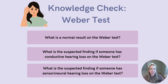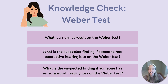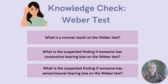Let's do a quick knowledge check on the Weber test. Number one: what is a normal result on the Weber test? That's right — sound is heard equally in both ears. Number two: what is a suspected finding if someone has conductive hearing loss on the Weber test? Sound lateralizes to the affected, or the bad ear. Number three: what is a suspected finding if someone has sensorineural hearing loss on the Weber test? The sound will lateralize to the unaffected, or the good ear.